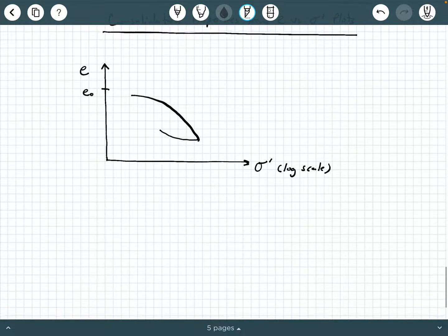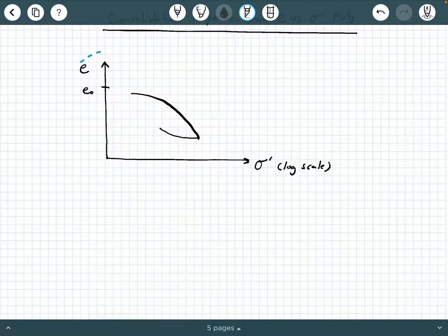So as a refresher, here is a void ratio versus effective stress plot. Remember, the effective stress is typically on a log scale. This region of the curve is our loading diagram. And then this little curl back up is the unloading or the rebound curve.